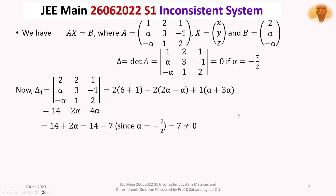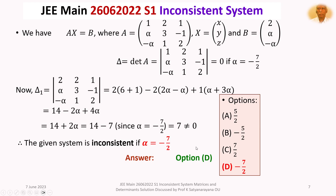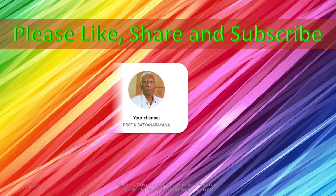Therefore, the given system is inconsistent — it has no solution — when alpha is equal to minus 7 by 2. Looking at our options, alpha equal to minus 7 by 2 corresponds to option D. That completes the detailed discussion of this problem on consistency and inconsistency of a non-homogeneous system of linear equations from the section Matrices and Determinants. I am sure you have understood the solution. I wish you all the best. Thank you.